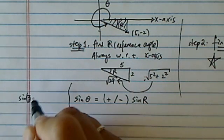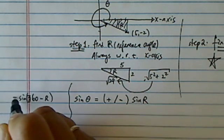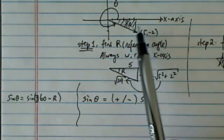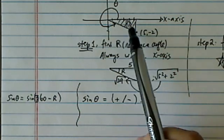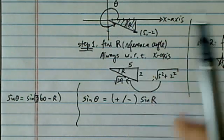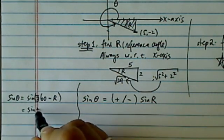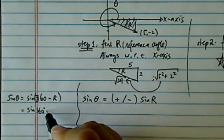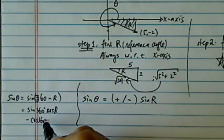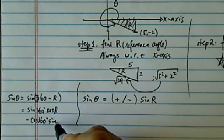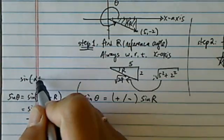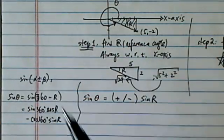So here we have 360 minus r is equal to sine of theta. Because you can see, with respect to x-axis, if I have 360 minus this little r, I end up with my big theta here. From here, you have sine of 360 minus cosine. This is just the standard formula for sine of alpha plus minus beta. You can use this to prove it.